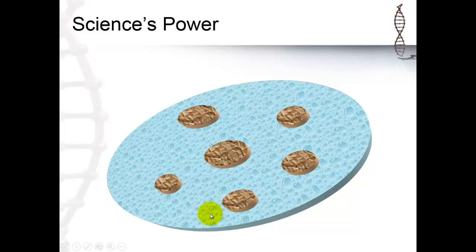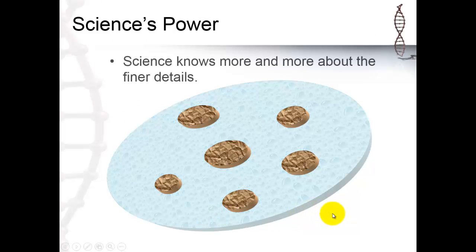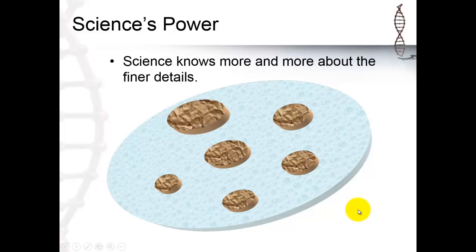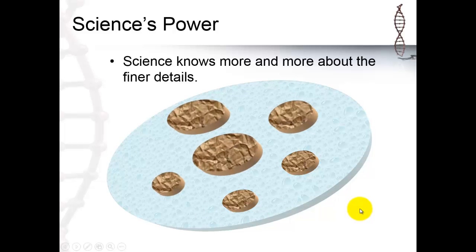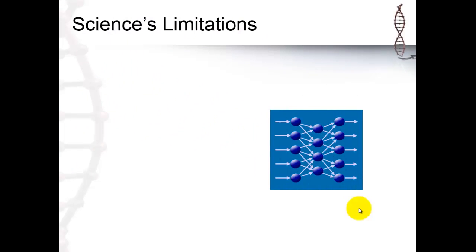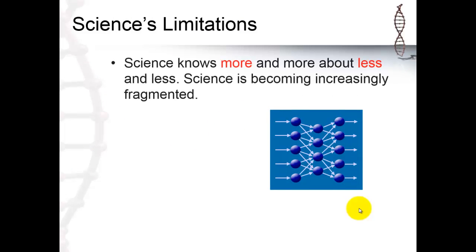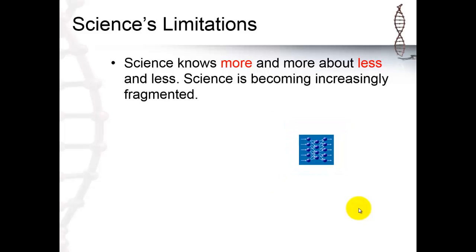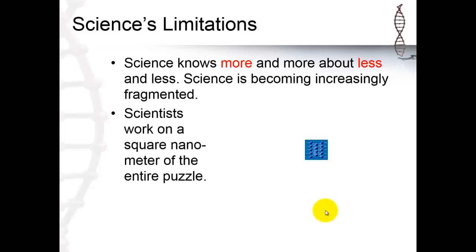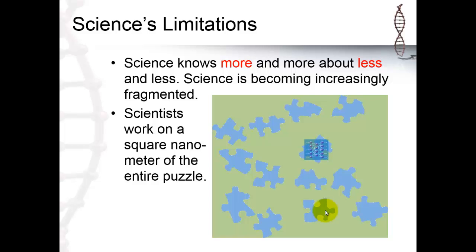So science's power is that it knows more and more about finer and finer details. And that's also where the limitations come in. We know more and more about less and less. Science is becoming increasingly fragmented. Scientists work on a square nanometer of the entire puzzle, and they don't realize that there are many other pieces of the puzzle.